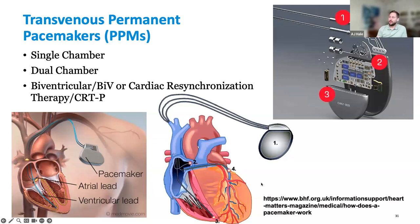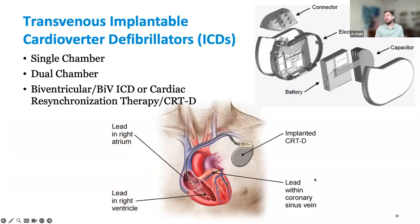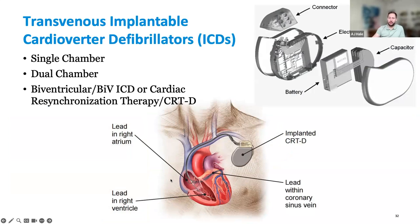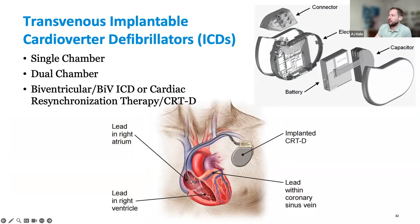Moving along, we have ICDs. ICDs are very similar in structure to a pacemaker, aside from the ability to defibrillate. Like a pacemaker, you have your header, circuit board, and battery. The key difference structurally, aside from a more complex circuit, is the capacitor, which allows it to deliver a massive charge. Batteries are like a tank with limited energy output; the capacitor takes a large amount of energy, stores it, and then releases it to defibrillate the heart.